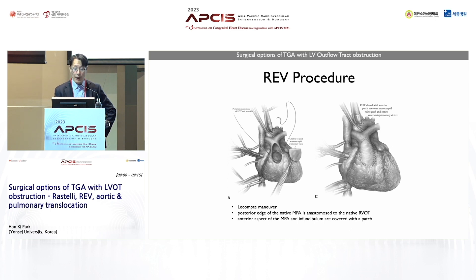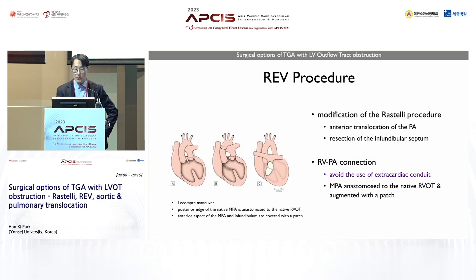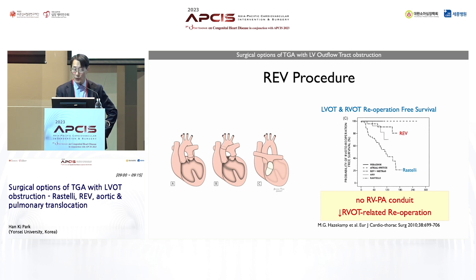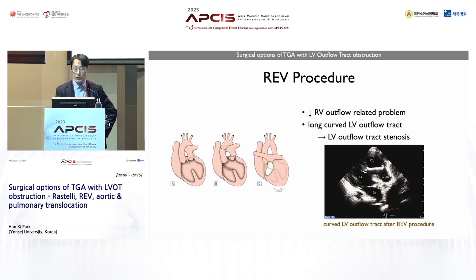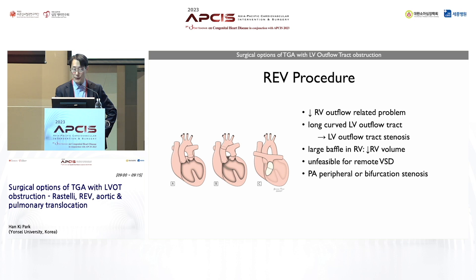In the REV procedure, the main pulmonary artery is taken anterior to the aorta and anastomosed to the native RV outflow tract, and the anterior aspect is reconstructed with a patch. This procedure allows us to avoid the use of an extracardiac conduit. By elimination of the RV-to-pulmonary conduit, we can reduce the RV-related re-operation rate. However, the REV procedure has the same problem as the Rastelli procedure because of the intraventricular tunneling — the same problem of a long curved LV outflow tract and the chance of LV outflow stenosis. This procedure is also unfeasible for patients who have a remote VSD.